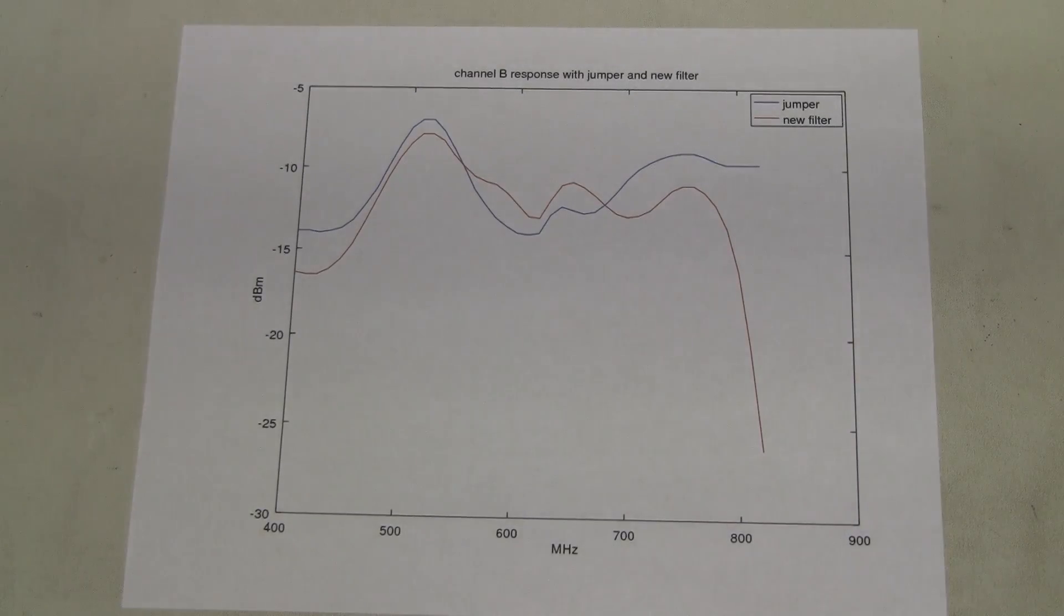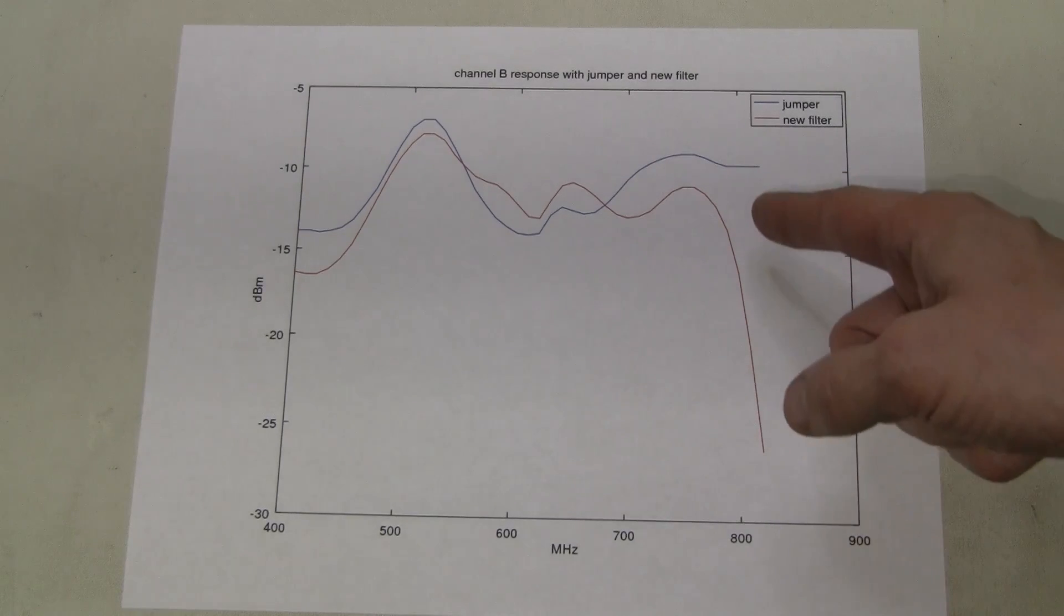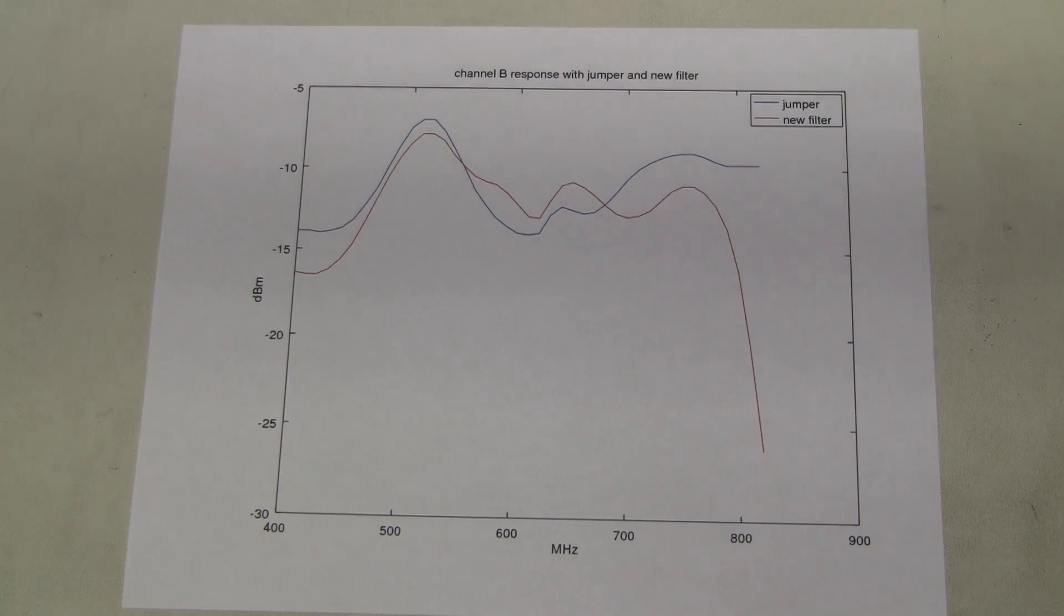Here is the result for channel B and I measured in a wider range of frequencies. I wanted to see the effect of the filter and as you can see it really removes the stuff above 770 megahertz as promised and results here are identical to channel A. So I think we can declare a success. Thank you very much for watching, bye.